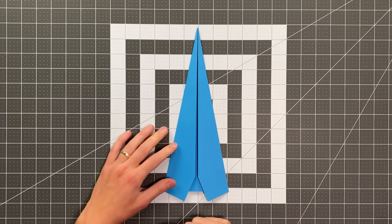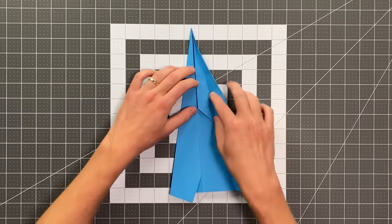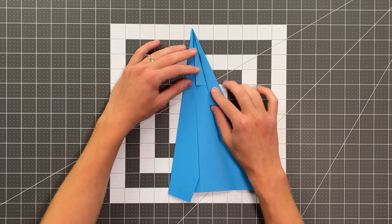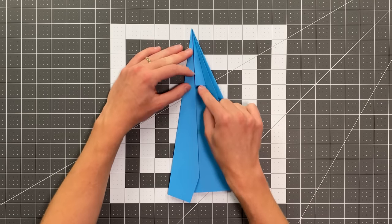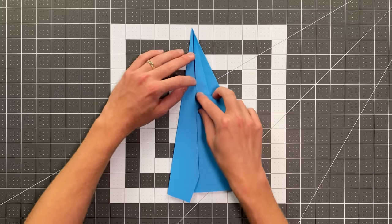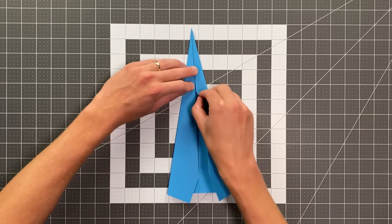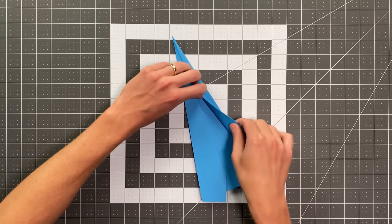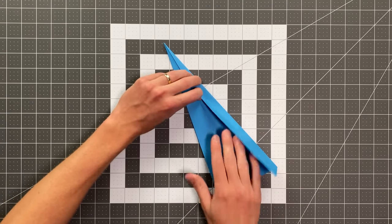And your plane should look like this. Now open the layer up to here and note where your kind of first flap intersects the center. And I'm just going to put my finger right there.